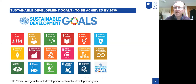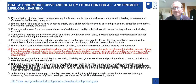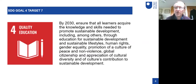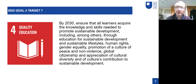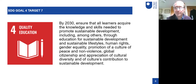We want to talk about a specific element — particularly Goal 4 on quality education. One specific target says: by 2030, ensure that all learners acquire the knowledge and skills needed to promote sustainable development, including through education for sustainable development, sustainable lifestyles, human rights, gender equality, promotion of a culture of peace, non-violence, global citizenship, and appreciation of cultural diversity and culture's contribution to sustainable development. That is important to read in full.